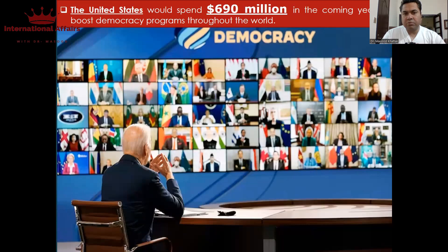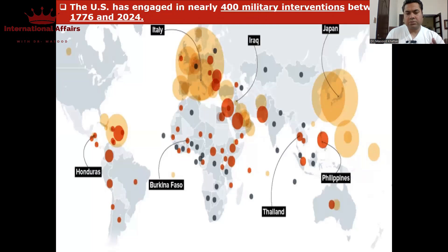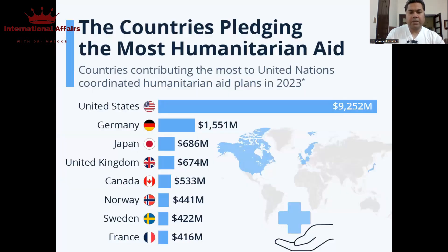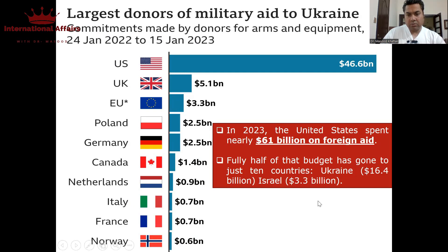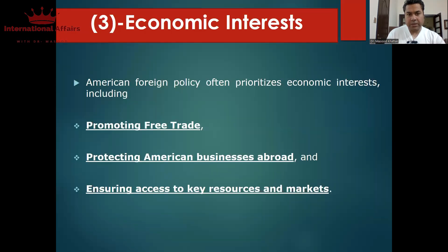آج یہ democracy promotion کے لیے تقریباً $690 million dollars کی funding دیتے ہیں worldwide — جس میں free and fair elections کروانا اور ملکوں کو influence کرنا شامل ہے۔ یہ دوسرا امریکہ کا foreign policy objective ہے — to promote democracy around the world۔ اس کے علاوہ امریکہ جو military aid یا financial aid دنیا کو دیتا ہے وہ 2023 میں تقریباً $61 billion کے قریب تھی۔ اس میں سے سب سے زیادہ aid Ukraine کو دی گئی — جو کہ $46 billion dollars کے قریب ہے۔ اسرائیل کو $3.3 billion dollars کی aid بھی امریکہ نے دی۔